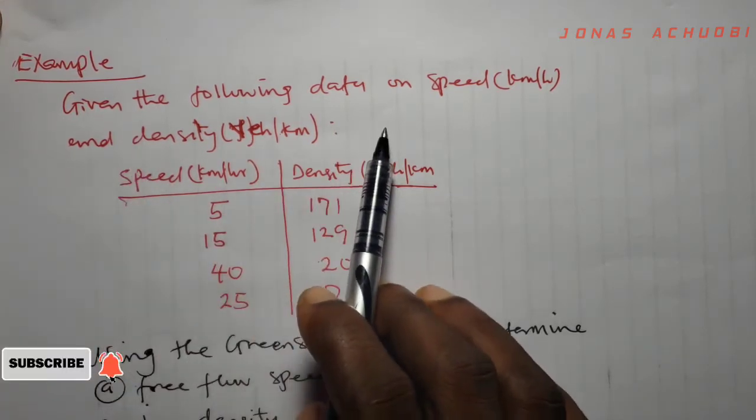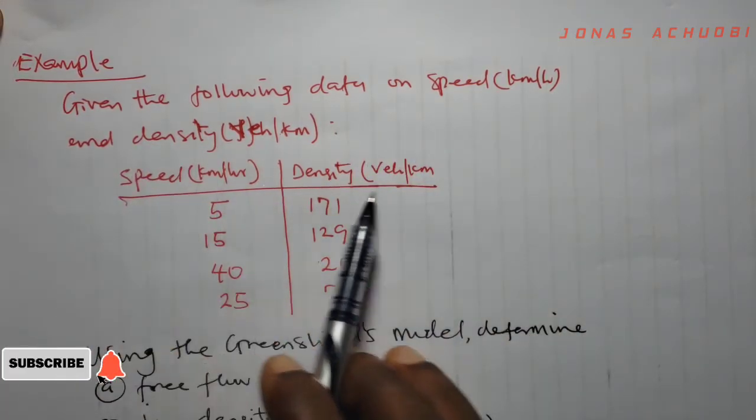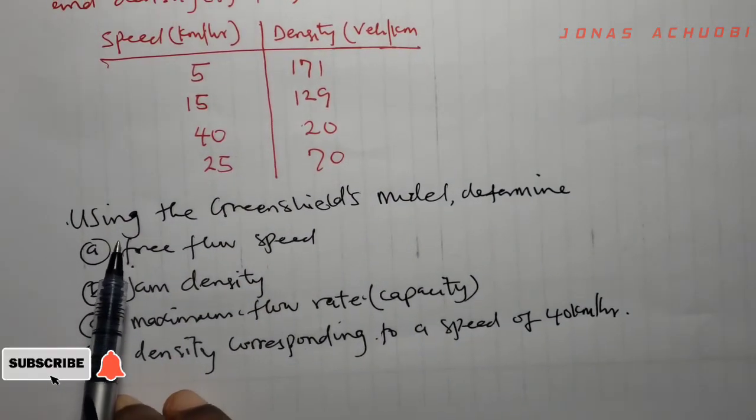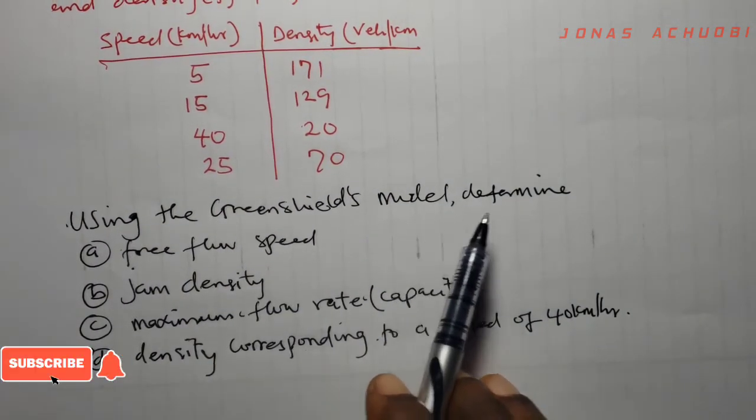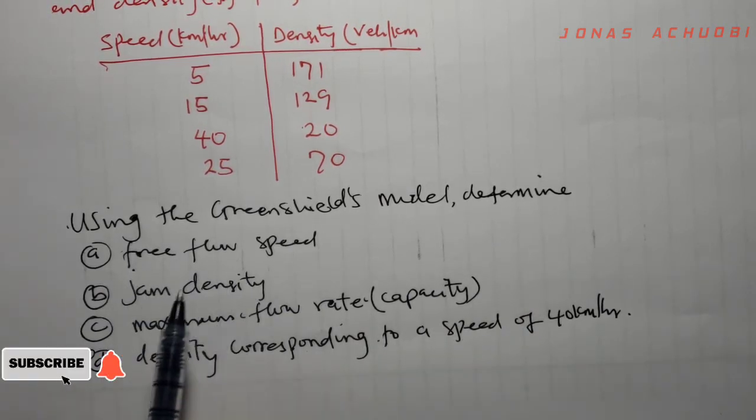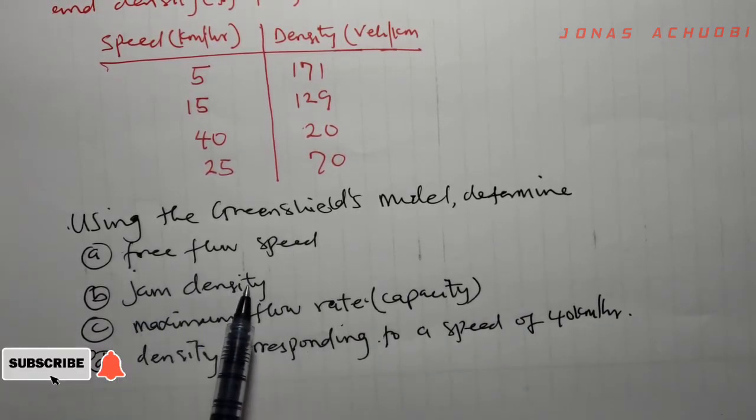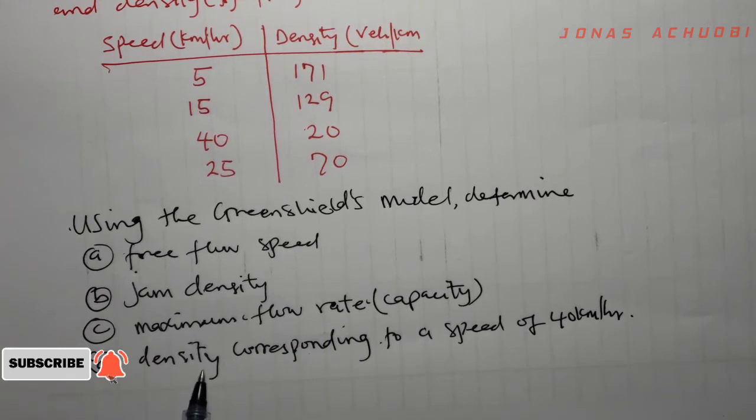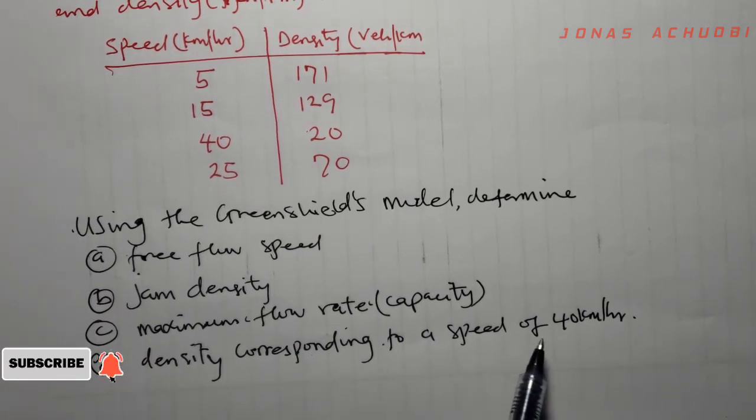Given the following data on speed and density, here's the data given to us. The question says using the Green Shields Model we should determine: a) the free flow speed, b) the jam density, c) the maximum flow rate also called the capacity, and d) the density corresponding to a speed of 40 km per hour.